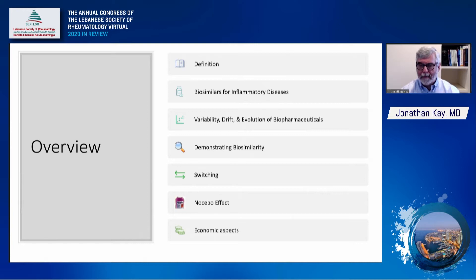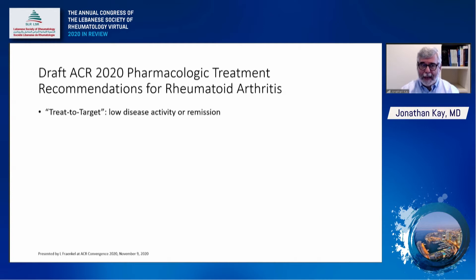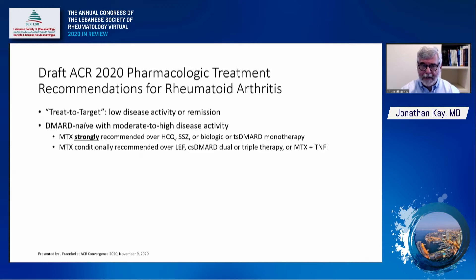The draft American College of Rheumatology 2020 pharmacologic treatment recommendations for rheumatoid arthritis were just presented on November 9th at ACR Convergence 2020. The guidelines describe a treat-to-target approach aiming for low disease activity or remission. For patients who are DMARD-naive with moderate to high disease activity, methotrexate is strongly recommended over other conventional DMARDs, biologic agents, or targeted synthetic DMARD monotherapy, and conditionally recommended over leflunomide, conventional synthetic DMARD dual or triple therapy, or the combination of methotrexate and TNF inhibitors.